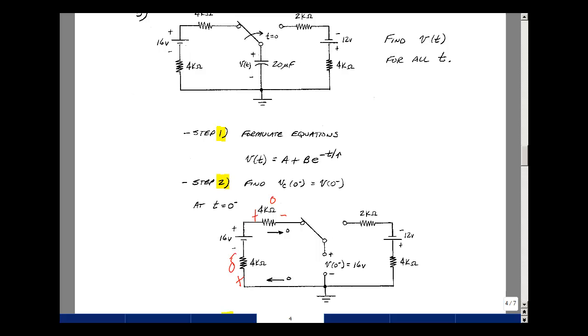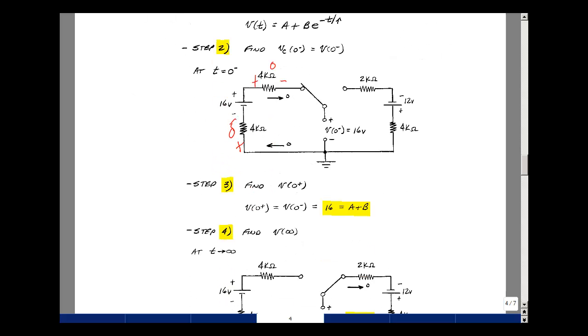Then the switch switches at t equals zero. And we can take our equation and say a plus b times e to the zero equals the value of the capacitor voltage at t equals zero plus. But it's also the same value at zero minus, that's equal to 16 volts. I have one equation here and two unknowns.